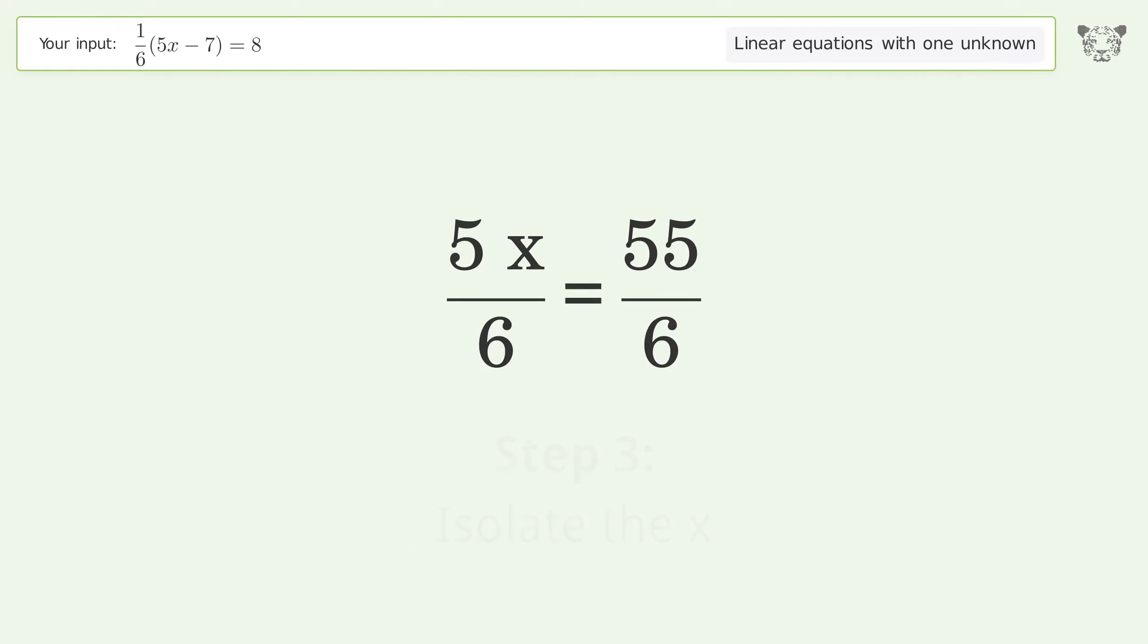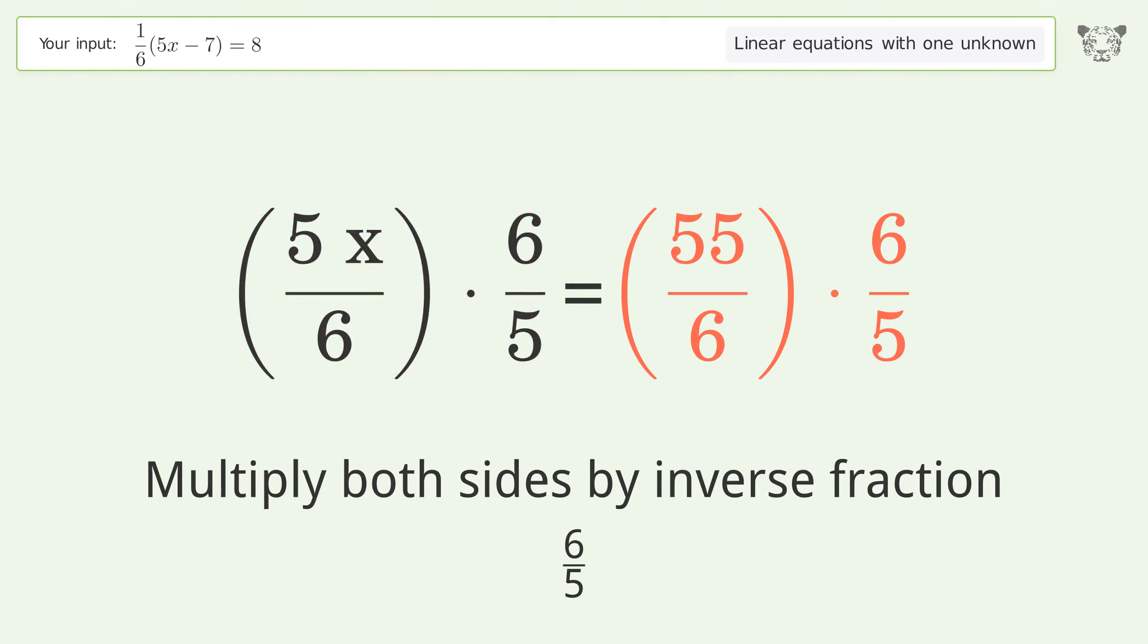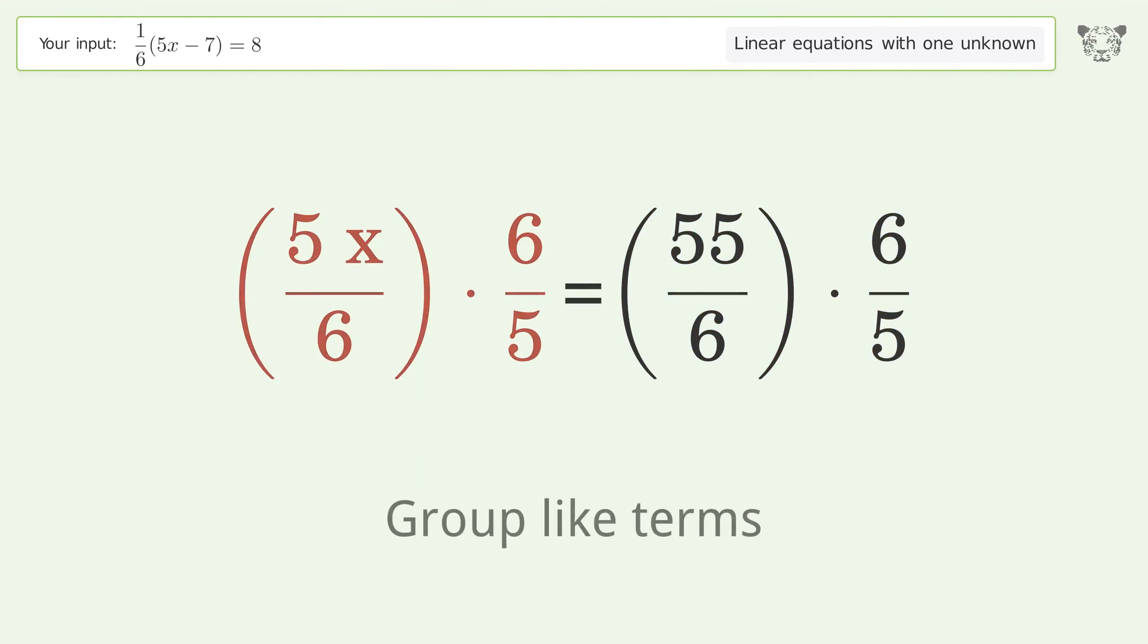Isolate the x. Multiply both sides by inverse fraction 6 over 5. Group like terms.